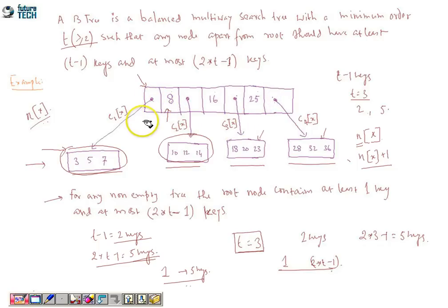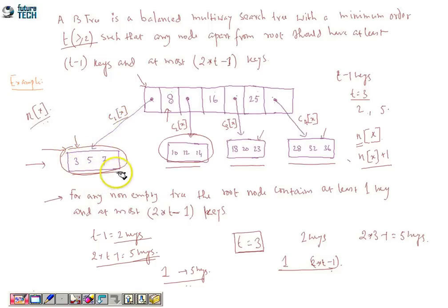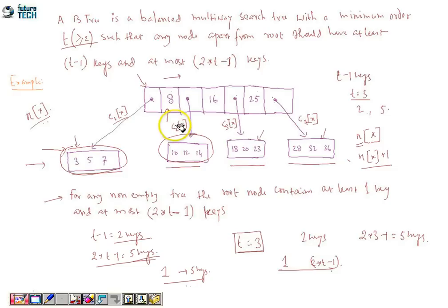For this node with three keys, there are always four pointers and four subtrees assigned to each pointer. The node assigned at pointer c1x — all the keys in that subtree should be less than or equal to this particular key value 8. All keys in a node are ordered in non-decreasing order.